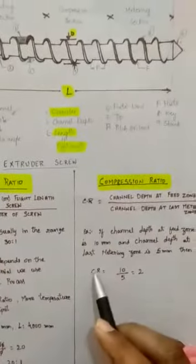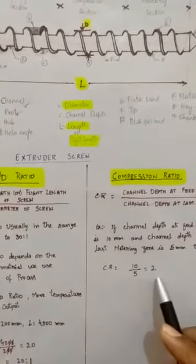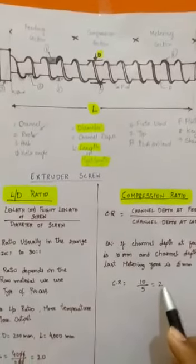Then compression ratio is equal to 10 by 5, that is equal to 2. So here the compression ratio is 2.